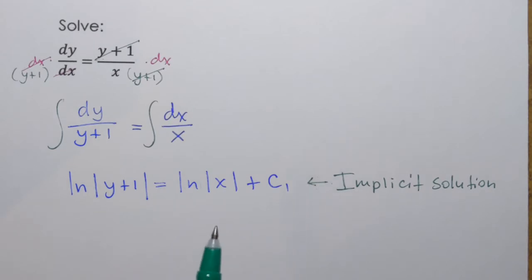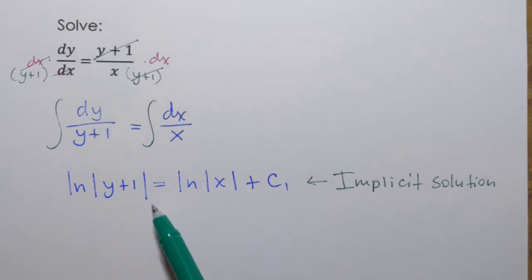And we already talked about how there is no need to obtain the explicit solution, in other words to get y by itself, unless it is important or convenient. So technically I can just leave it like that and move on with my life.